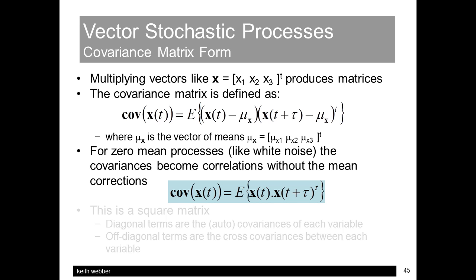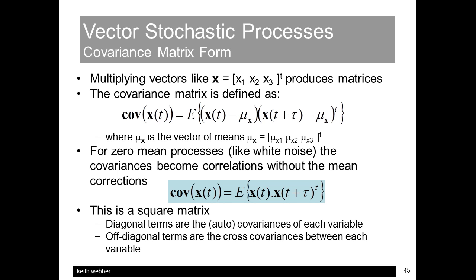It's a square matrix whose diagonal terms are variable autocovariances, and off-diagonal terms are the cross-covariances between the variables.